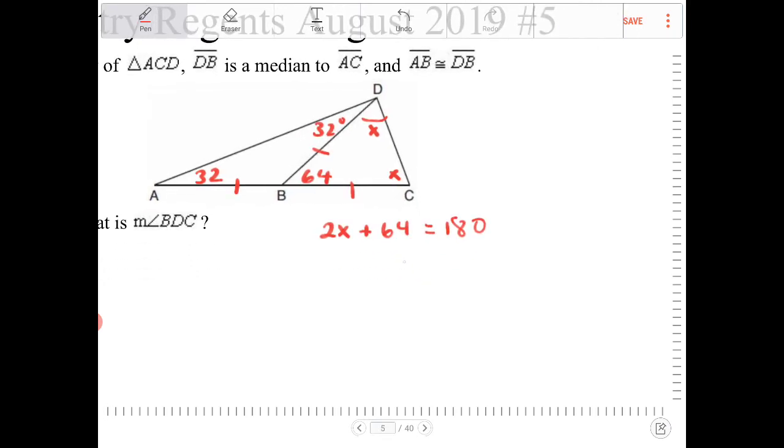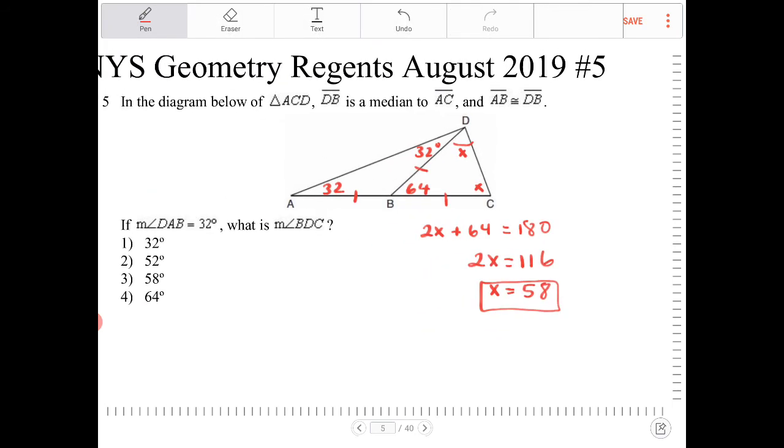Subtract 64 from both sides, I get 2X equals 116. Divide by 2, X equals 58. So angle BDC equals 58 degrees, which is option 3.